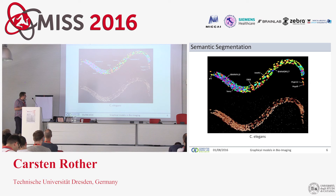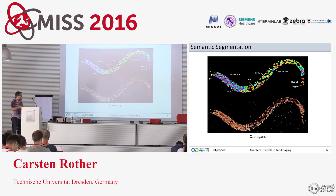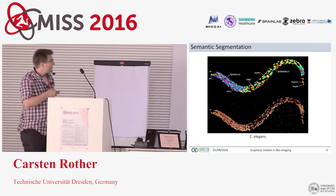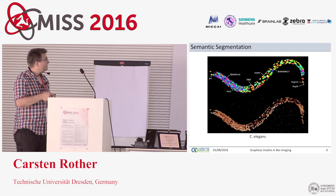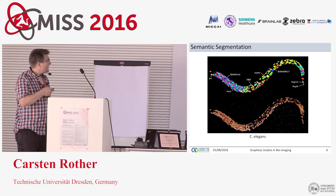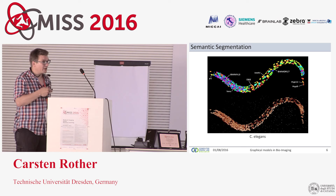Then we're going to talk about semantic segmentation of C. elegans - this is the worm. The goal is to find each nucleus, the core of the cell, and give it a name. People have gone through a very painstaking process of labeling quite a lot of these worms, giving every nucleus a label at a particular time point. Interestingly, for C. elegans all of the nuclei always develop in the same way - this is called a lineage tree.